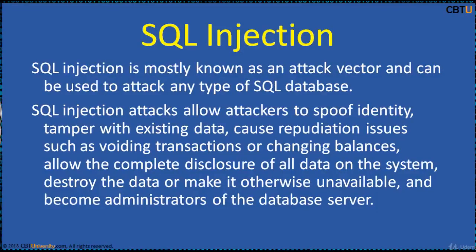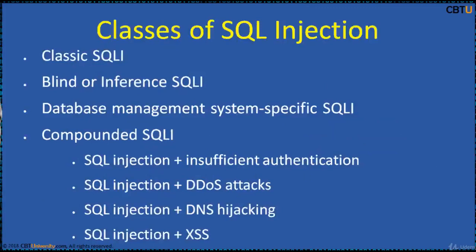SQL injection attacks allow attackers to spoof identity, tamper with existing data, cause repudiation issues such as voiding transactions or changing balances, allow complete disclosure of all data on the system, destroy data or make it unavailable, and become administrators of the database server. The four main classes of SQL injection are: classic SQLI, blind inference SQLI, database management system specific SQLI, and compound SQLI.